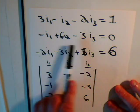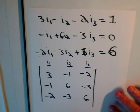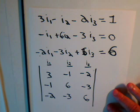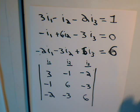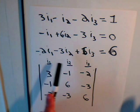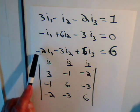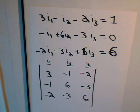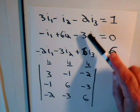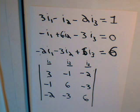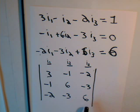We have three separate equations and three unknowns to solve for: current 1, current 2, and current 3. With three unknowns and three independent equations, we should be able to solve for I1, I2, and I3. The first step is to arrange the coefficients of I1, I2, and I3 into columns, giving us a 3 by 3 determinant. Step 1 is to determine the numerical value of this determinant.